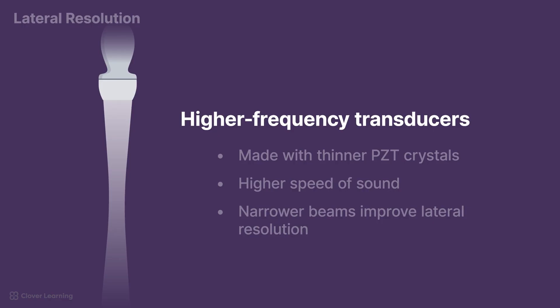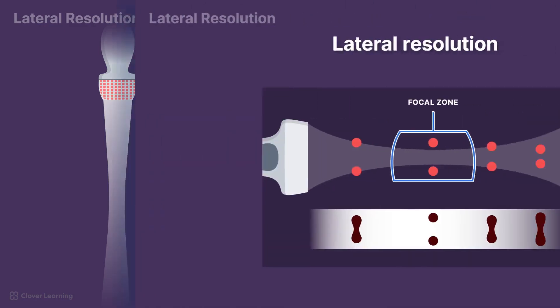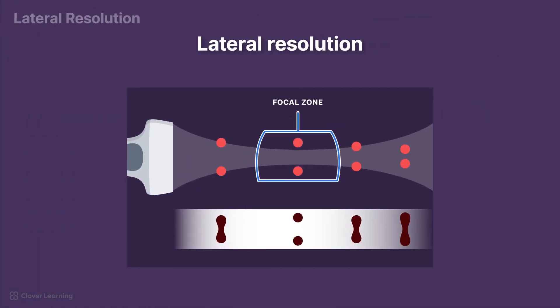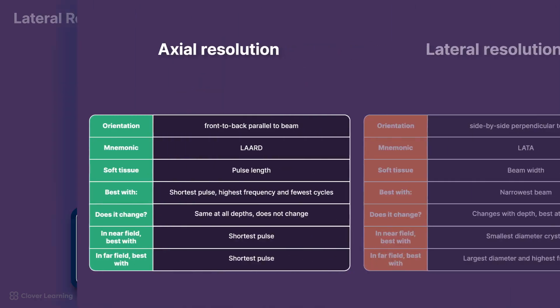Higher frequency transducers are made with thinner PZT crystals that have a higher speed of sound. This allows them to produce narrower beams, thus improving lateral resolution. Unlike axial resolution, which remains constant at all depths, lateral resolution varies with depth. It is best at the focus of the beam, which makes beam focusing techniques essential for optimizing image clarity in specific regions of interest.